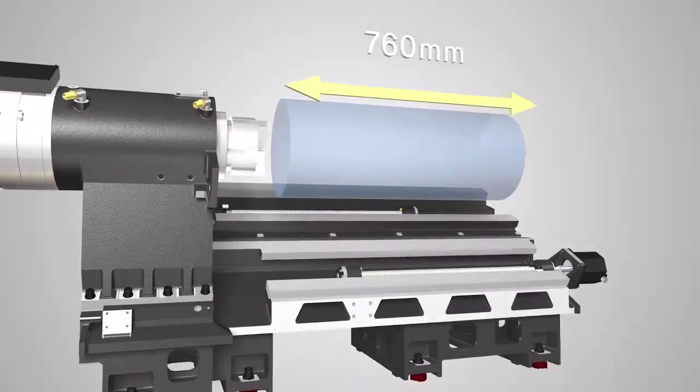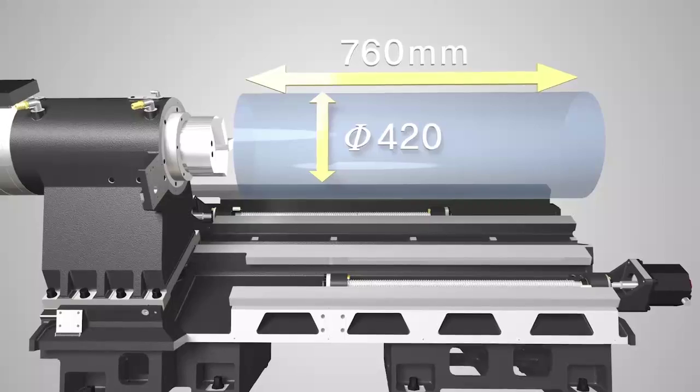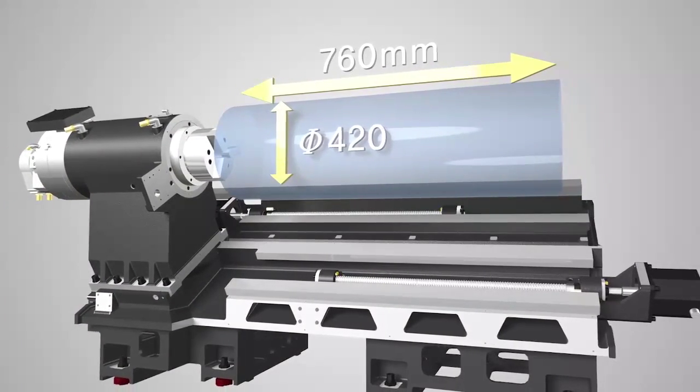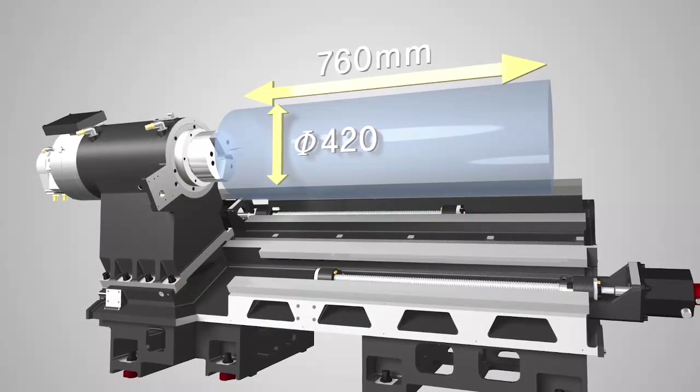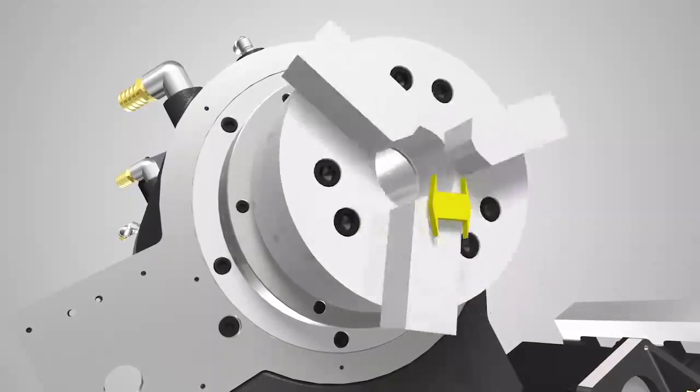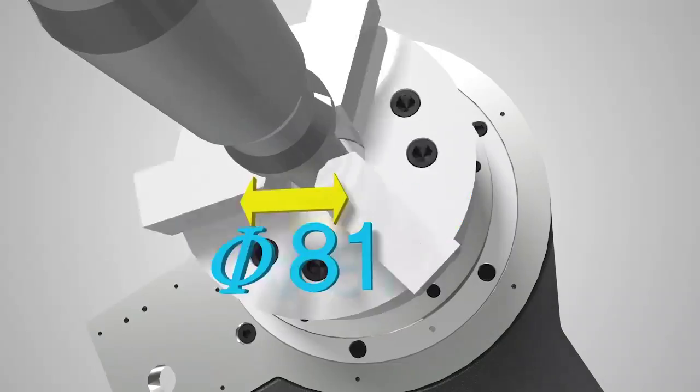With the max turning length of 760mm and max turning diameter of φ420, which is φ44 larger than the competitors, L2600SY shows excellent performance when machining large parts. Also, the bar capacity is increased to φ81 enlarging machine range.